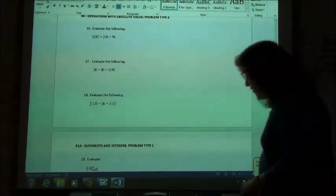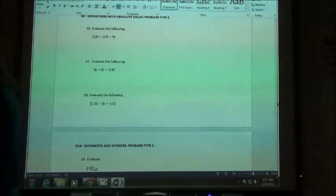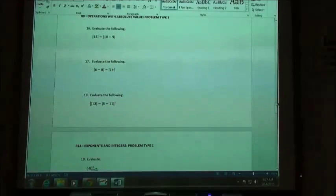Problems 16, 17, and 18 have to do with absolute values. We talked about absolute values on Monday being the distance of the number from 0 on the number line. This basically makes your number positive.